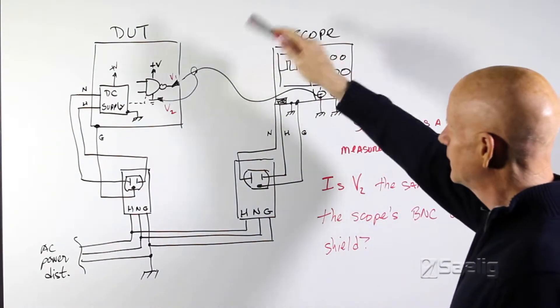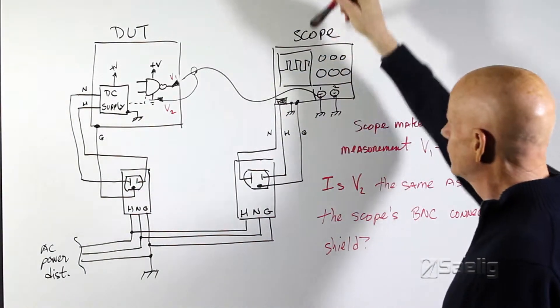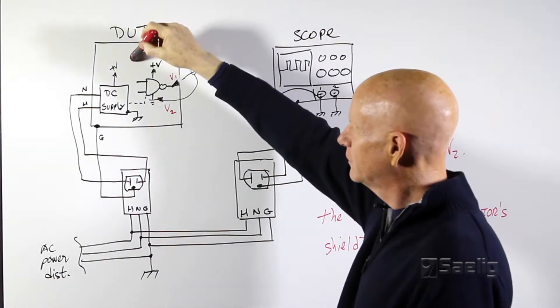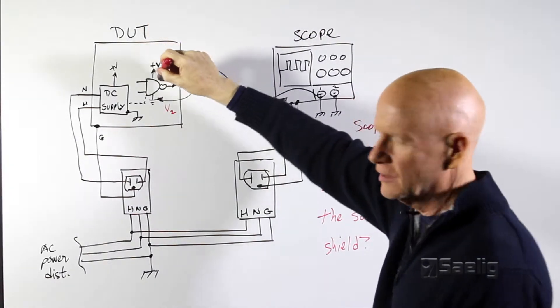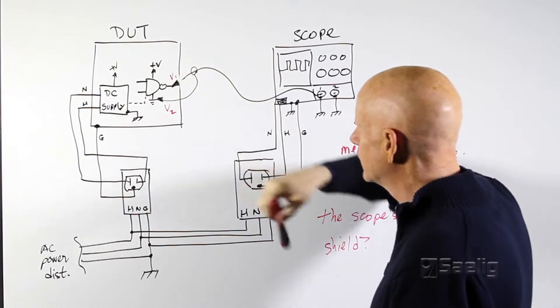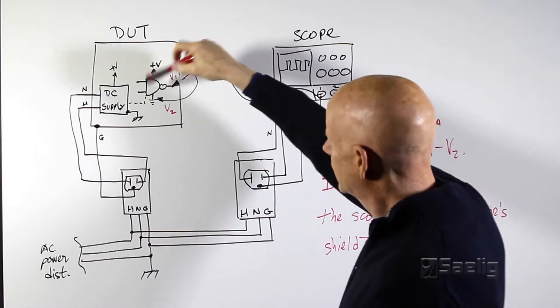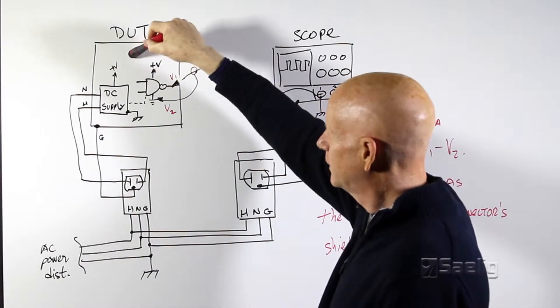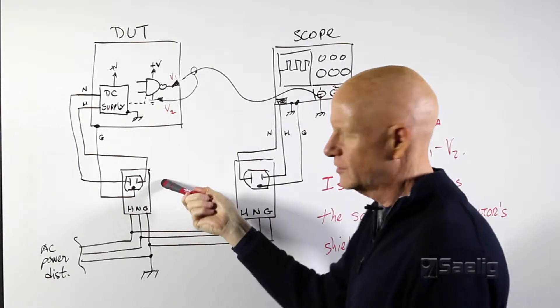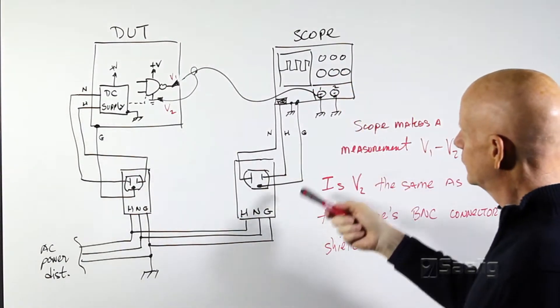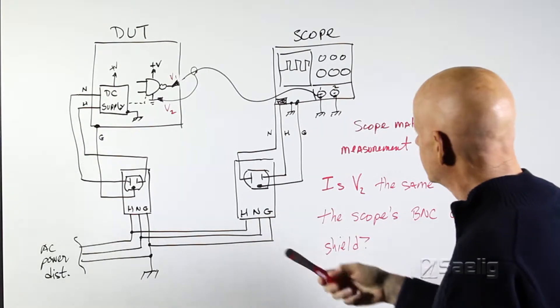Okay, so here might be a typical measurement scenario where you've got your AC operated scope and you're working on an AC powered device under test and you're trying to measure some logic gate inside the thing, see what it's doing. So what we've got is the logic gate powered up by the DC supply inside your unit and the DC supply, of course, getting its power from the AC wall outlet. And the scope's doing the same thing over here with its AC power.